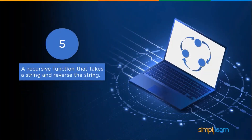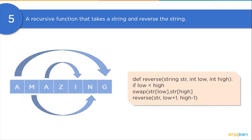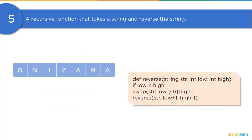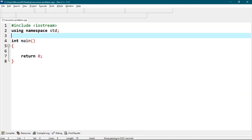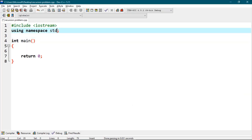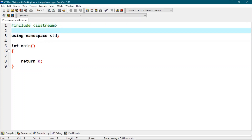Finally, we will discuss a recursive function that can reverse a given string. We will start with creating a function reverse with arguments string str, integer low, and integer high. First, we will check if the string is greater than one character. If yes, we will swap them. Then we will move to our next pair by calling the recursive function reverse with incrementing low and decrementing high by one. Now let's try this code in the code editor.